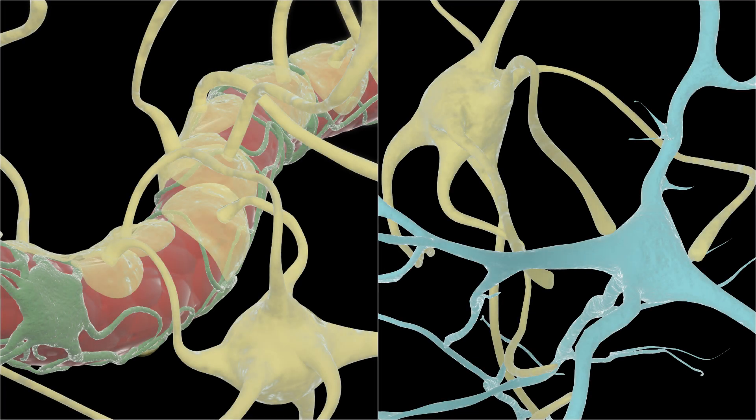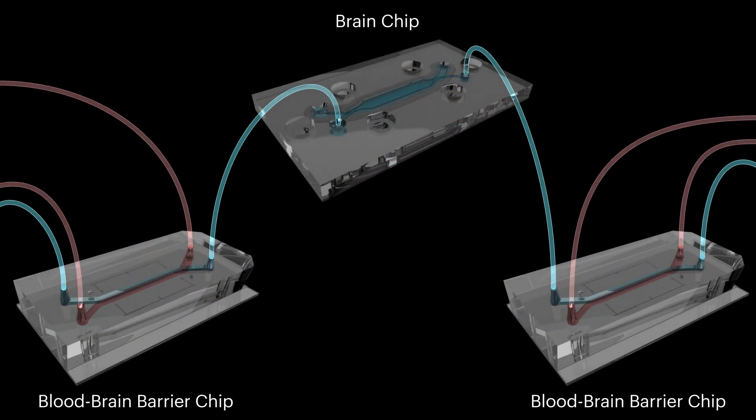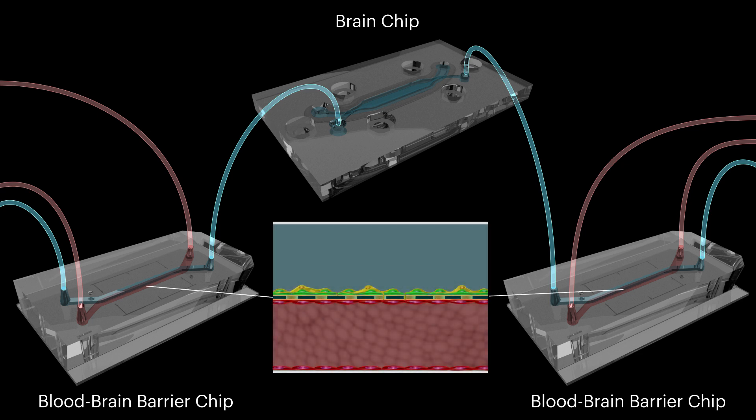To learn how the cells of the blood-brain barrier interact with brain cells, researchers at the Wyss Institute and Harvard SEAS have developed a linked blood-brain barrier chip and brain chip system. The two blood-brain barrier chips each contain a vascular channel lined with human endothelial cells separated by a porous membrane from a parallel perivascular channel containing cultured brain astrocytes and pericytes.